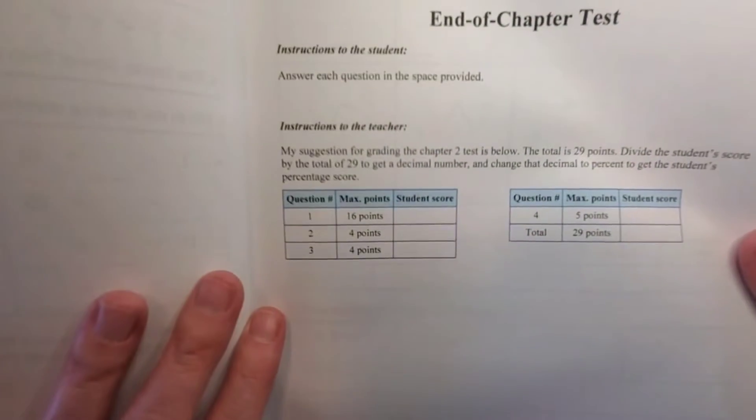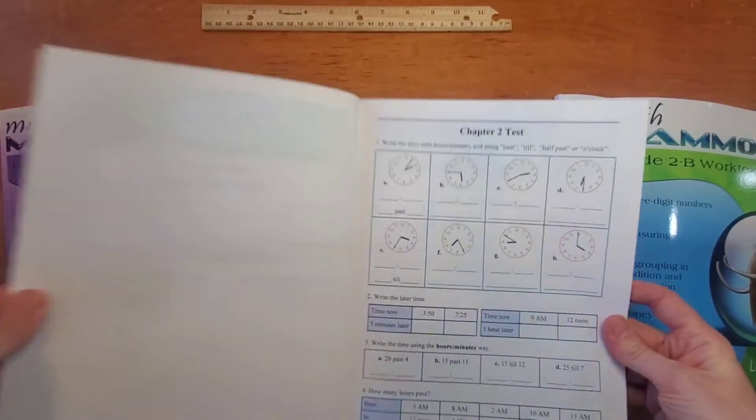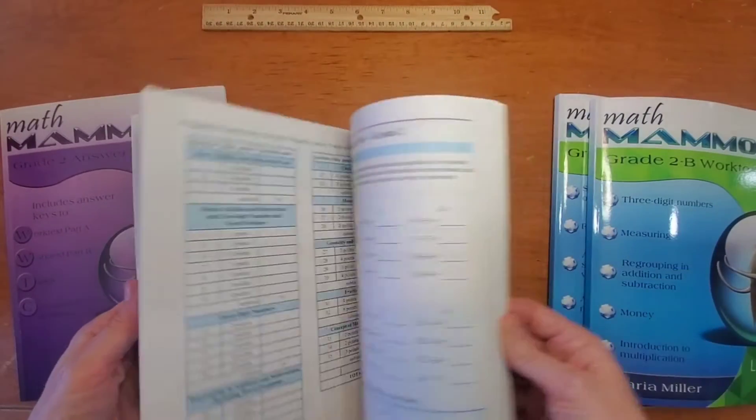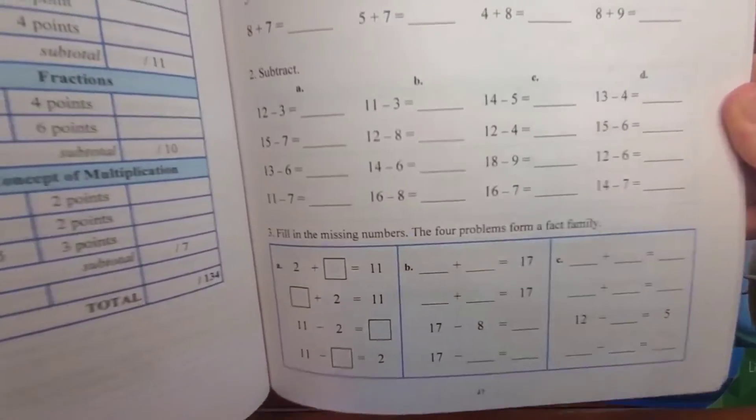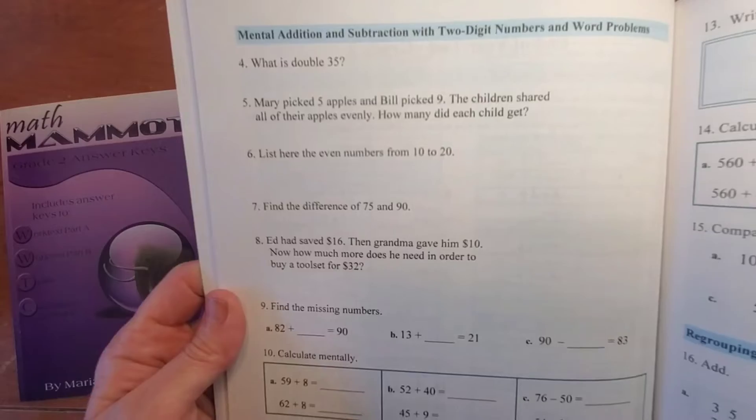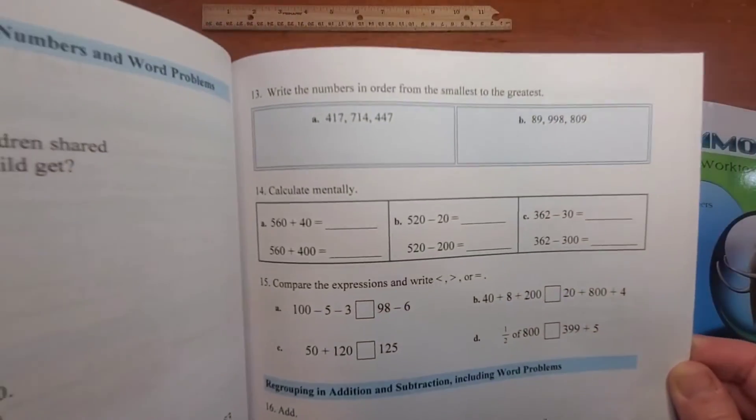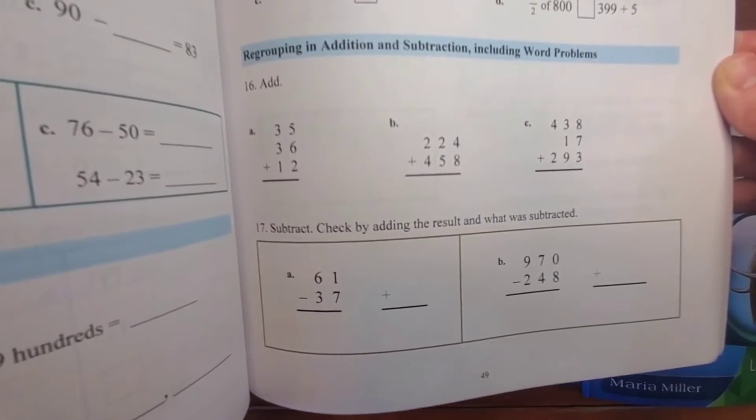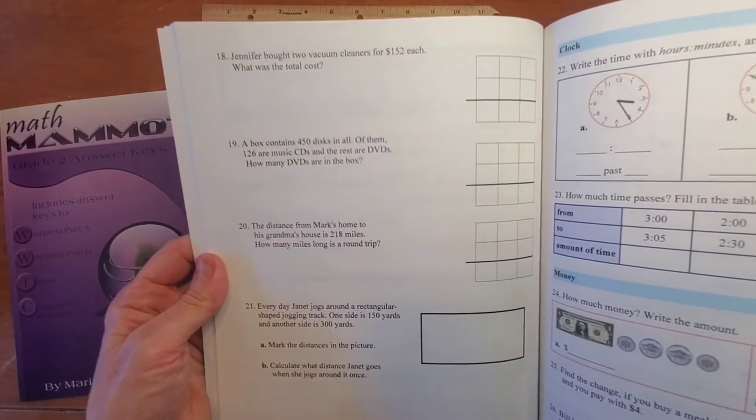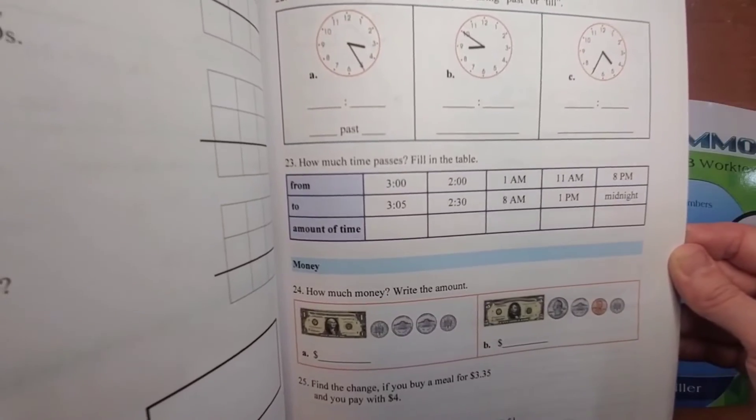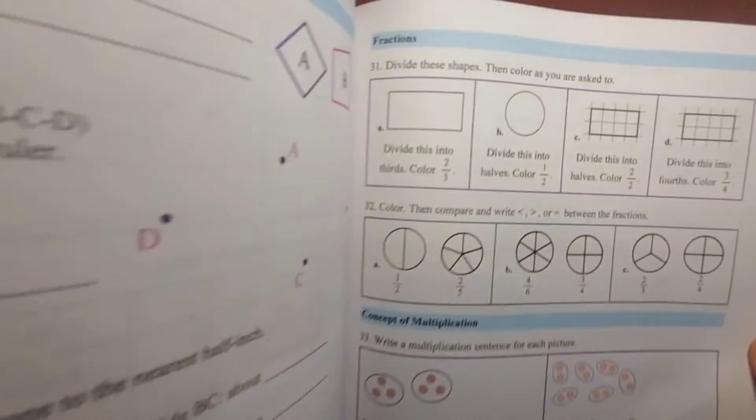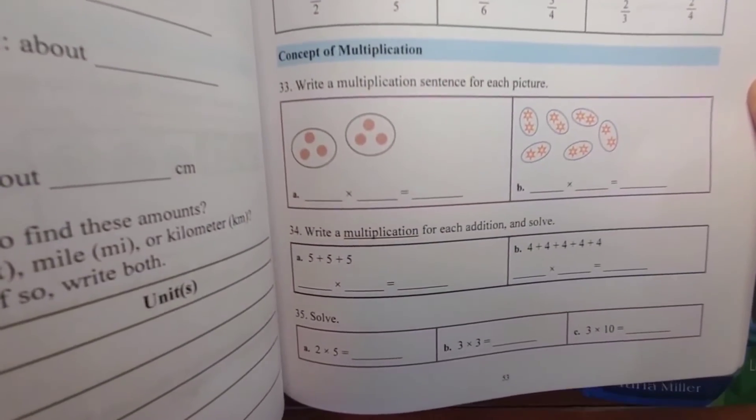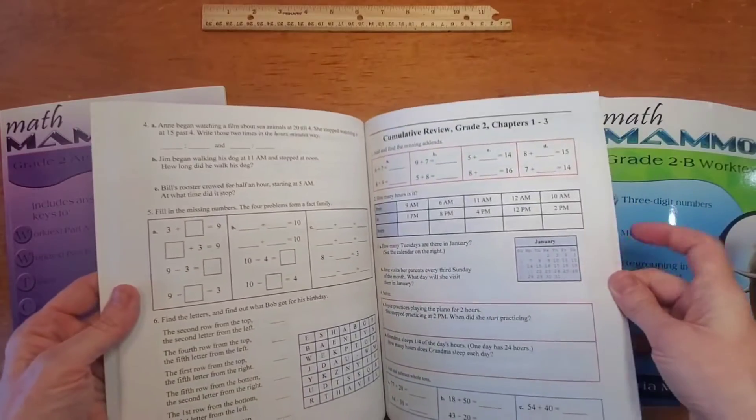They tell you at the beginning how to grade it. And then the cumulative reviews are at the end here. They do also have this end of the year test for the whole grade. So that could be helpful. It covers all the things.